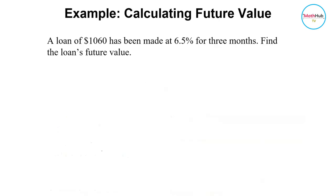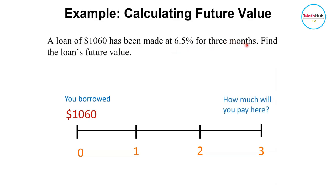Now let's see how we can apply or use that formula to calculate for a future value. A loan of $1,060 has been made at 6.5% for three months. Find the loan's future value.